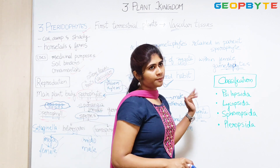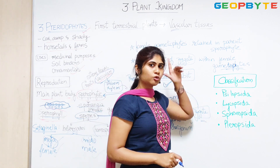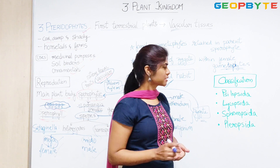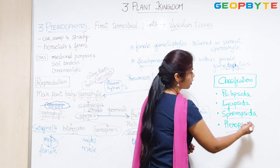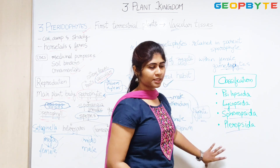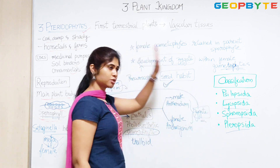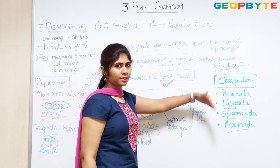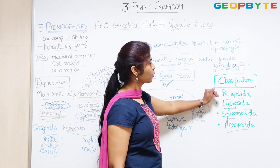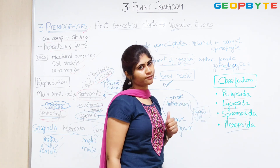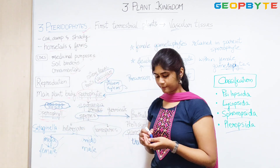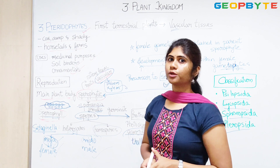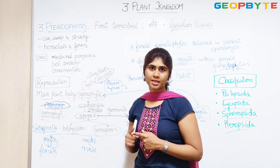Pteridophytes are further classified into four different classes: Psilopsida, Lycopsida, Sphenopsida and Pteropsida. The classification is based on the characters we have discussed. This is all about the general characters of Pteridophytes. The next topics will be gymnosperms and later angiosperms. Thank you for watching — please do like, share, comment and subscribe to Geobite.